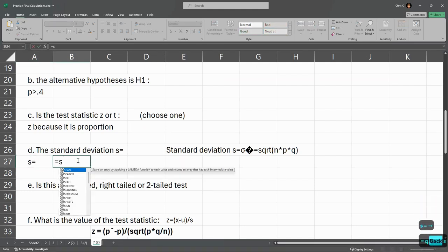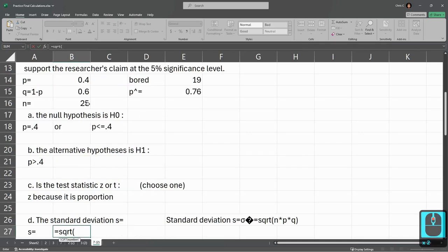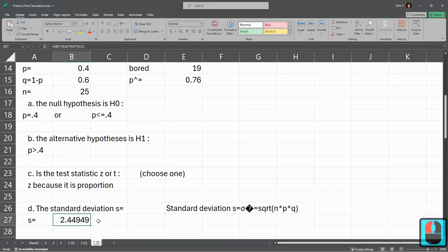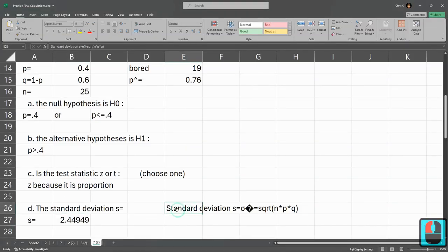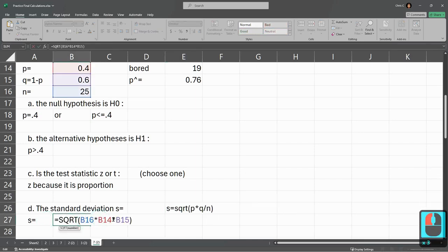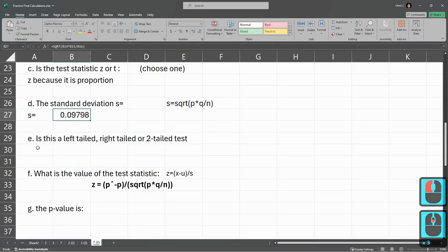So S equals square root. Now N is 25 times P times Q right there. You're not using P hat. It's a regular P. So the original P, the Q, and the N. Multiply them together. That's our standard deviation. That's the one I was looking for. Divided by N. There we go. Standard deviation.